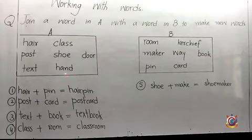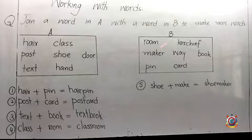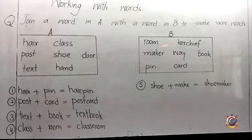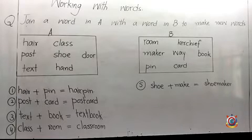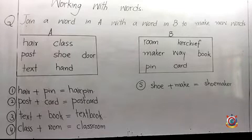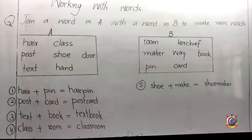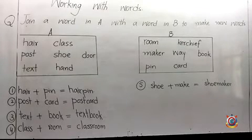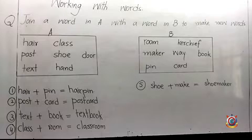The next word is 'hand'. We have only two words left: kerchief and weight. Hand plus weight is impossible, so the answer is handkerchief. A handkerchief is the piece of cloth used for wiping our sweat or blowing our nose. Note that when hand and kerchief are joined together, the D becomes silent — you say 'handkerchief', not 'hand-kerchief'. You will not read the D in the complete word.